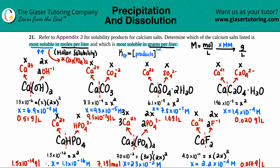I accidentally wrote 'grams per mole' for some — they should all be grams per liter. Looking for the highest number, 7.1 g/L for Ca₃(PO₄)₂ is the winner. So Ca₃(PO₄)₂ is the most soluble both in moles per liter and in grams per liter — the same answer for both parts. Hopefully this helped! Thank you for watching, and subscribe to the channel if you want to help us out. Talk to you later, bye!